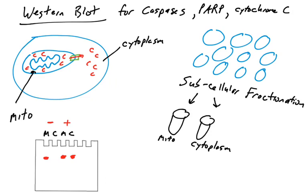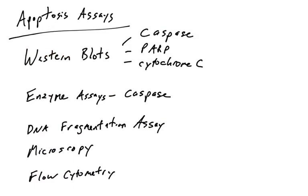So those are ways scientists use Western blotting to detect whether or not apoptosis is occurring. First, cleavage of caspases — if their size changes, apoptosis is occurring. Second, cleavage of PARP — if PARP is being cleaved, that is an indicator of apoptosis. And finally, cytochrome C localization — if cytochrome C is moving into the cytoplasm, detectable by Western blotting, that is another indicator of apoptosis.